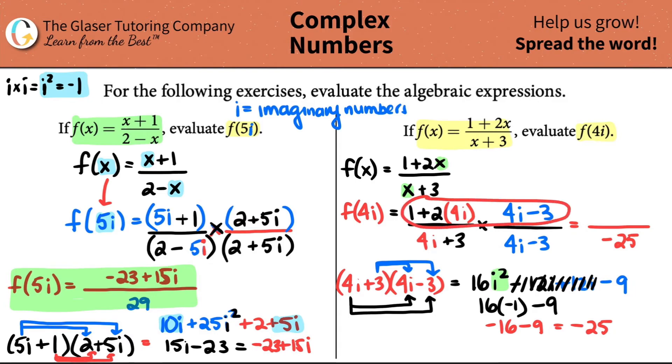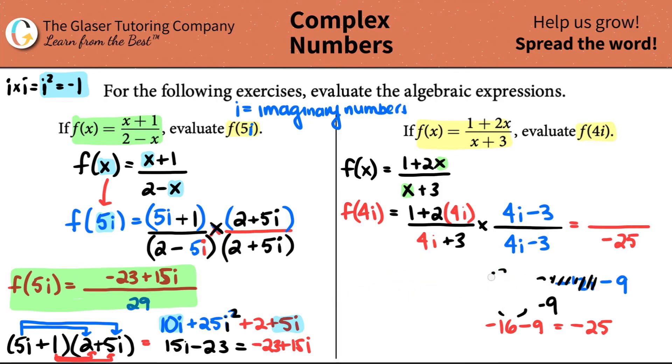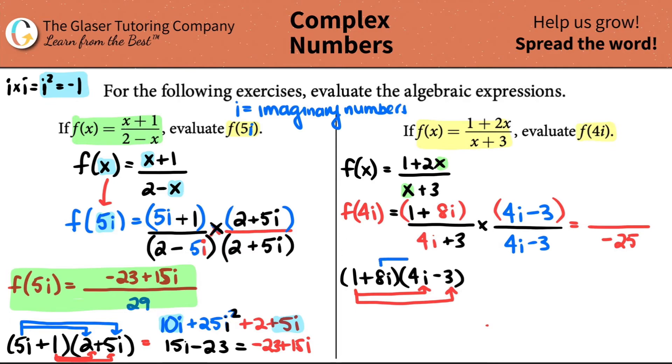Now we just have to work with the top. Now the first thing that I see is that this part isn't really simplified yet. I have a 2 times a 4i. So what is 2 times 4i? 2 times 4i is just 8i. Now I'm ready to multiply the two tops. So the two top guys are 1 plus 8i times 4i minus 3. And we got to be fair. We have to multiply the 1 by the 4i. Then we got to multiply the 1 by the negative 3. Then we go to the second term. The 8i has to be multiplied by the 4i. And then it's got to be multiplied by the negative 3.